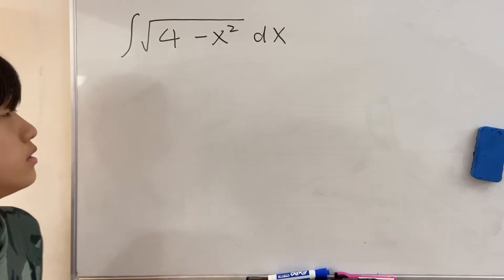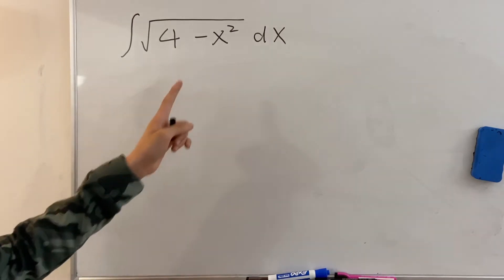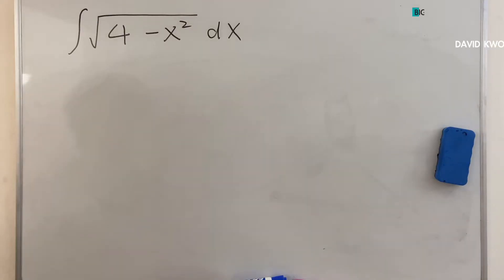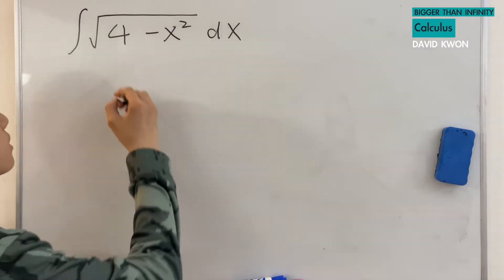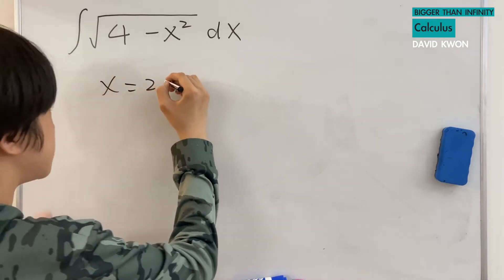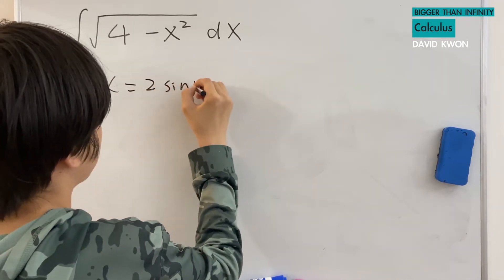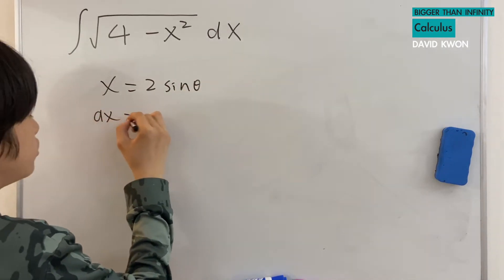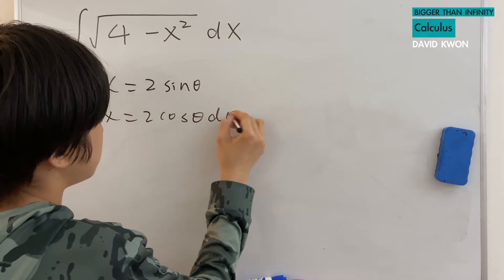Hello everyone. In today's video we will be integrating this problem. To start off, we need to write that x is equal to 2 times sin theta, which also means that dx is going to be 2 times cos theta times d theta.